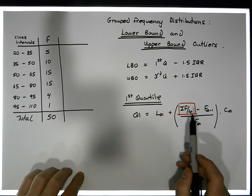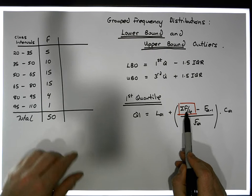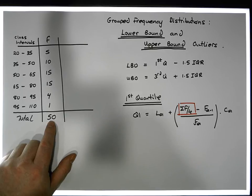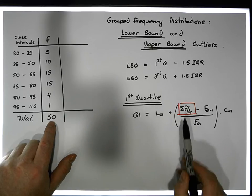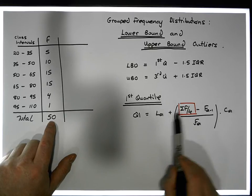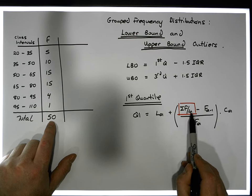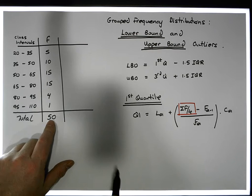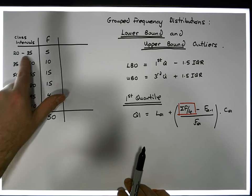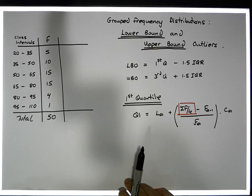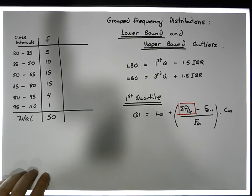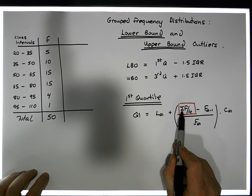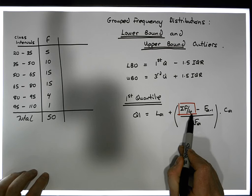The first quartile must be — well, sigma F represents the total number of observations that we have, so we have 50 observations. So the first quartile, or the first quarter, must be a fourth of those 50 observations along with respect to the ordering of the observations. To calculate the quartile class where the quartile will reside, we need to calculate sigma F over 4.